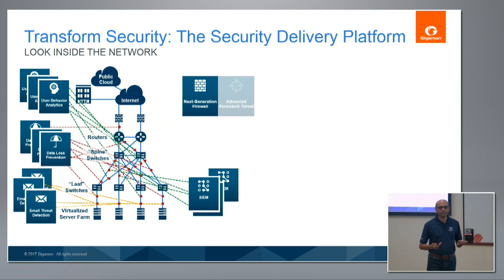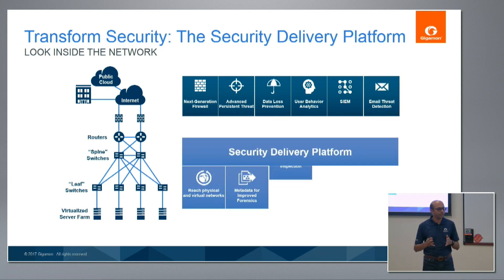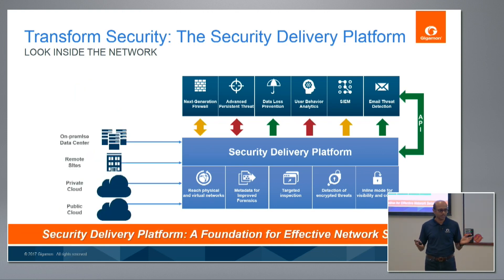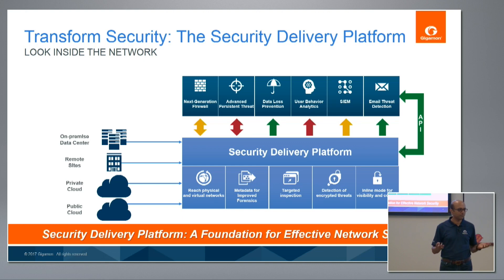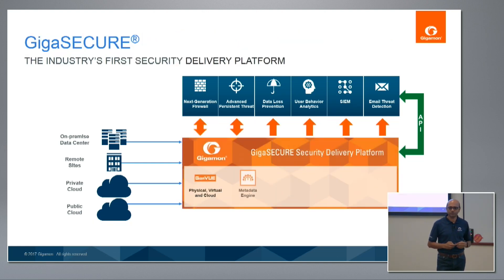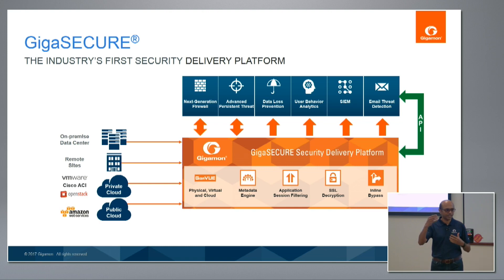When we introduced the security delivery platform architecture, it was an architectural way to think about security for the modern enterprise, where you have a streamlined deployment of tools that obtain pervasive visibility to data anywhere in the infrastructure. When I talk about data, I'm talking about data extracted from network traffic, because perimeter protection alone is not sufficient. That is the concept of the security delivery platform. GigaSecure is our brand for the security delivery platform, and today's session will focus a lot on the metadata engine as well as the application programmer interfaces in terms of how you could integrate between the tools.